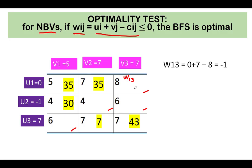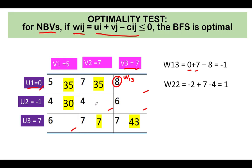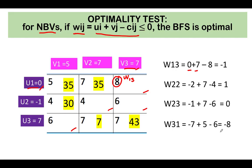Let's compute the weights. For the empty cell at row 1, column 3: w₁₃ = 0 + 7 − 8 = −1. For row 2, column 2: w₂₂ = −1 + 7 − 6 = +1. For row 2, column 3: w₂₃ = −1 + 7 − 7 = 0. For row 3, column 1: w₃₁ = 0 + 5 − 8 = −8. Notice that all weights are optimal (≤ 0) except the positive one at cell w₂₂.